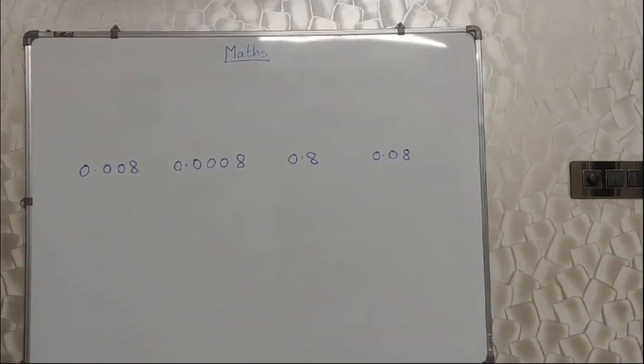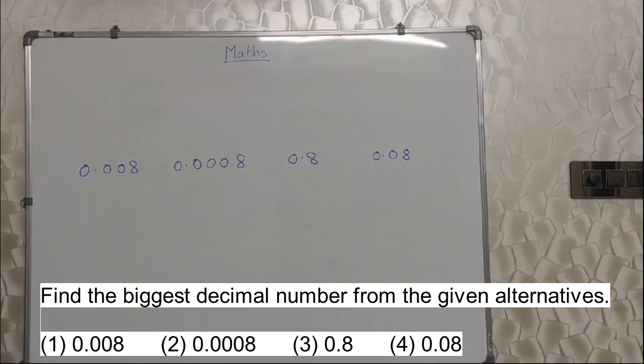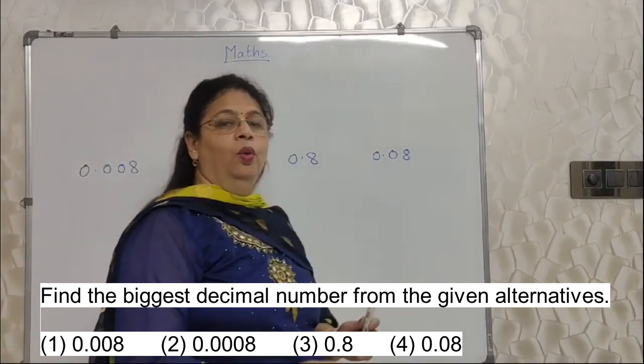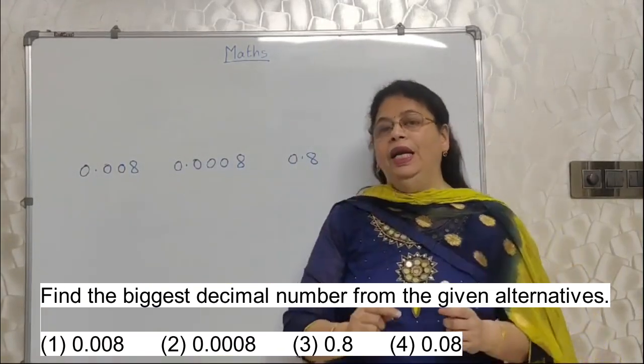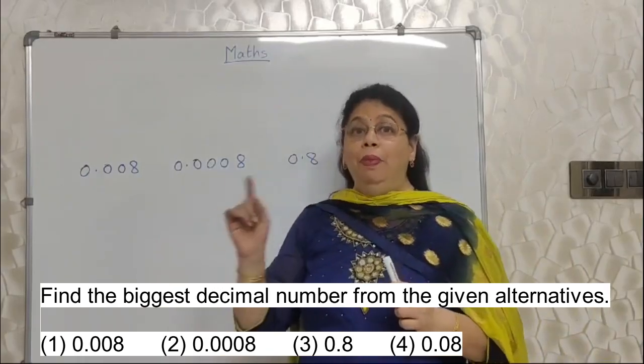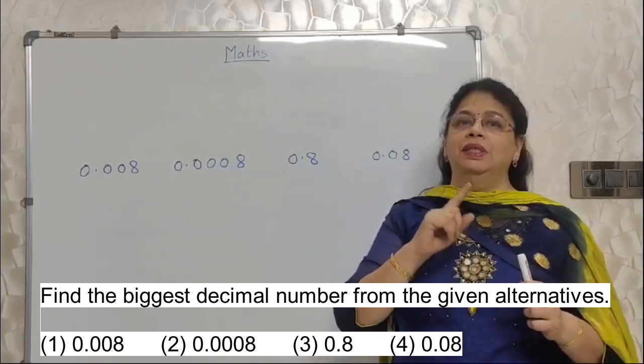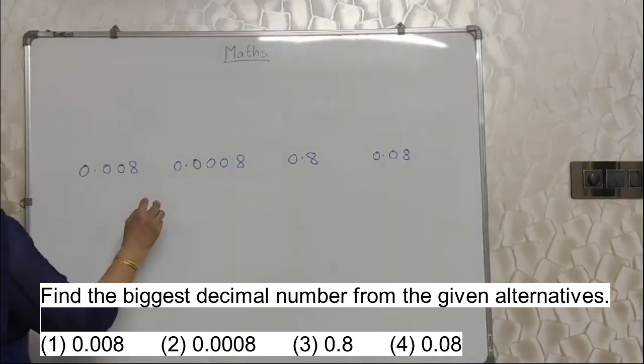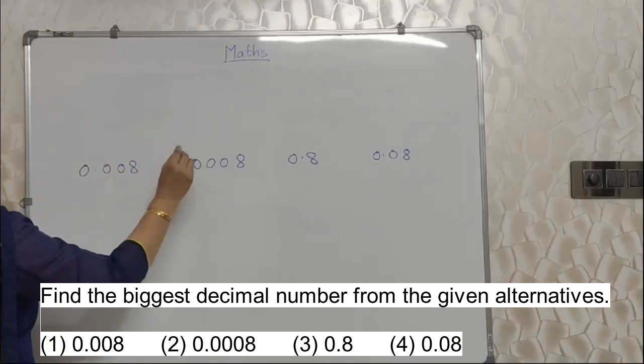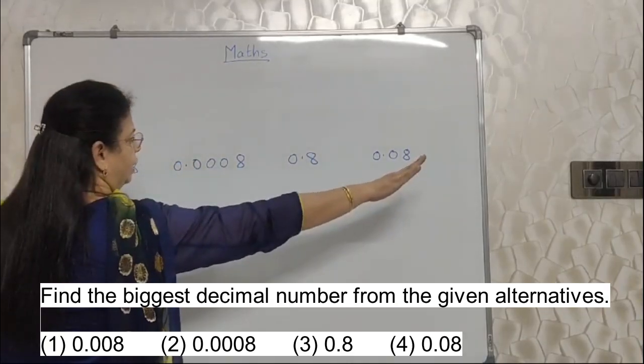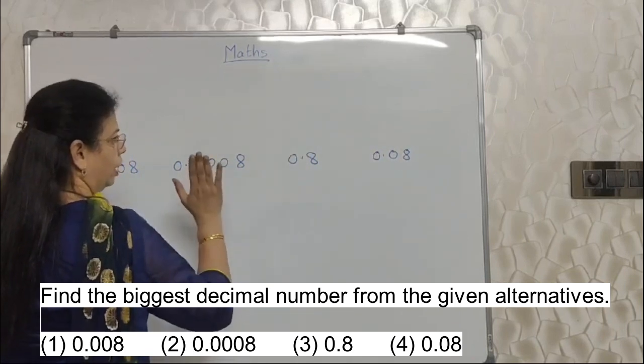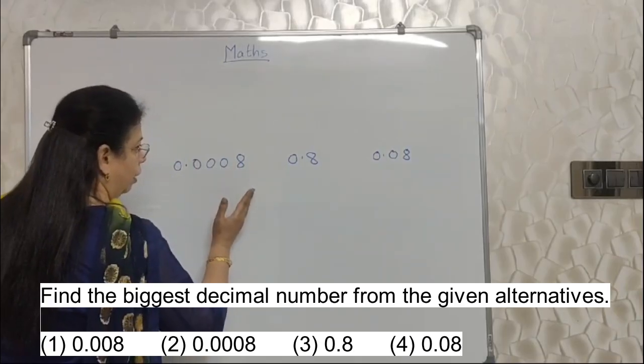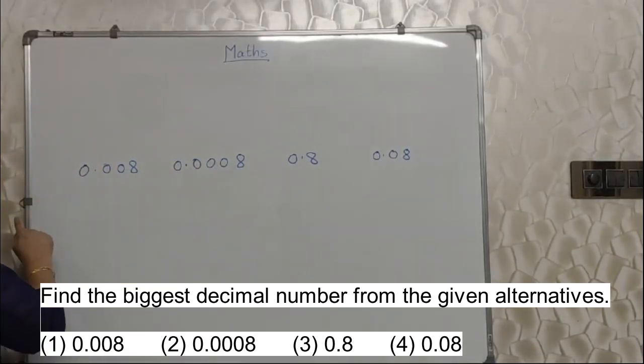See the next question. Find biggest decimal number from the given alternatives. I have written 4 alternatives here. Very easy. I have deliberately taken this particular sum. It's very easy. But probability of making mistake is also more here. Very simple rule.